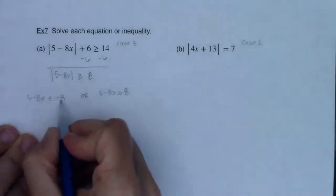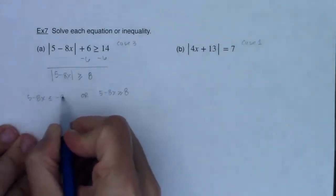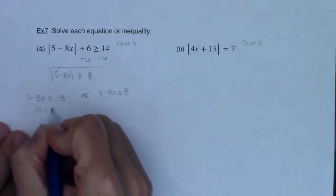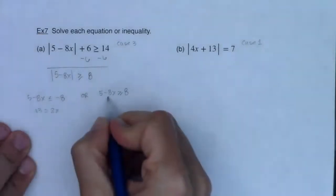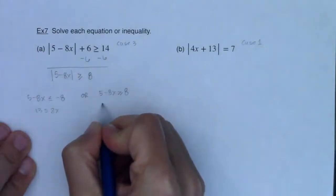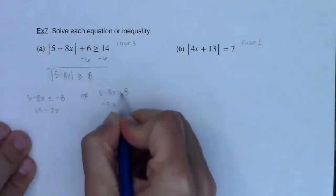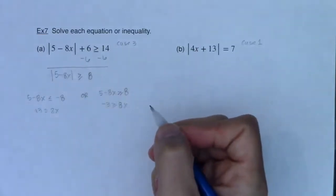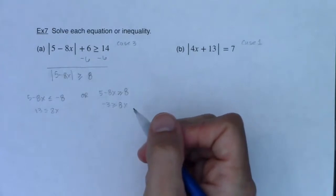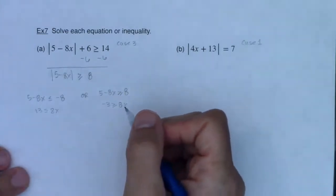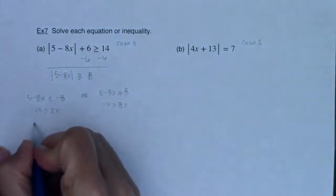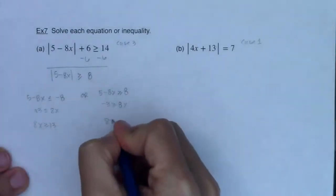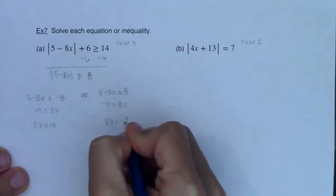Now it's time to solve. Moving the 8x and the 8 over, I get 13 is less than or equal to 8x for the first inequality, and negative 3 is greater than or equal to 8x for the second. I like my variables on the left side, so I'll rewrite as 8x greater than or equal to 13, and 8x less than or equal to negative 3.